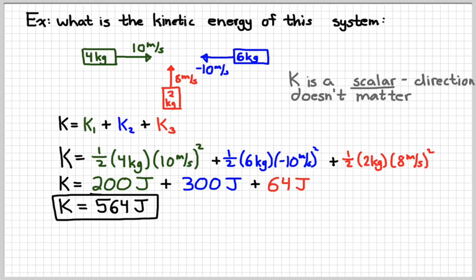If those objects were going in the opposite directions from what we had drawn before, that would not change the energy one little bit. Changing the size of the velocity or the mass would be the only thing that would change the answer for that energy.